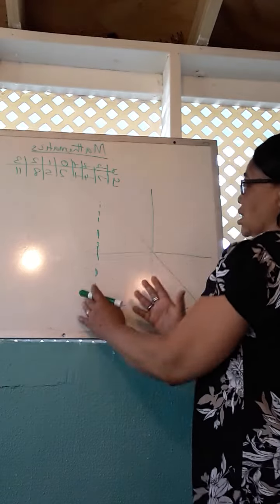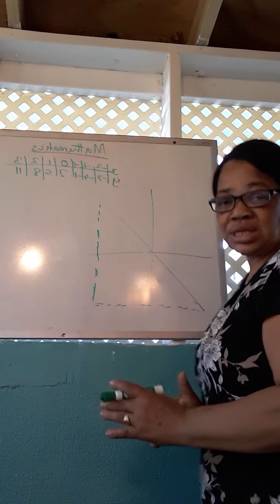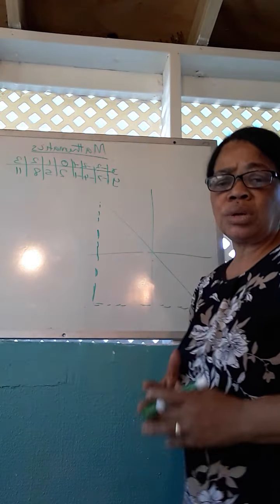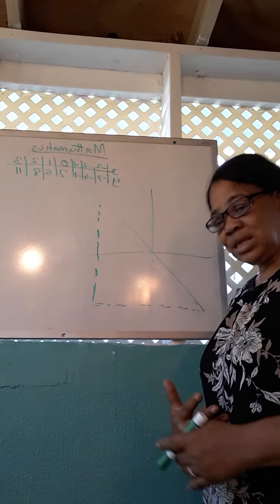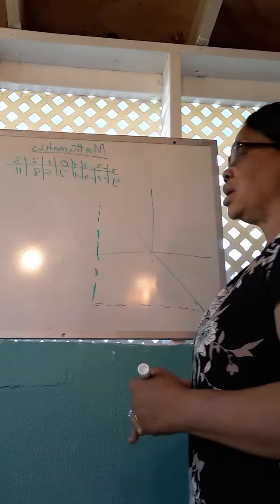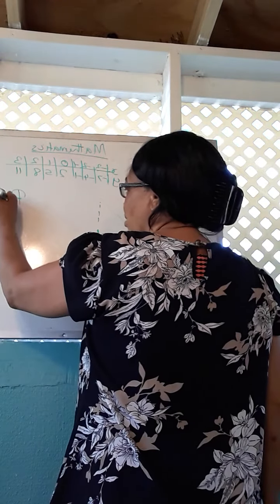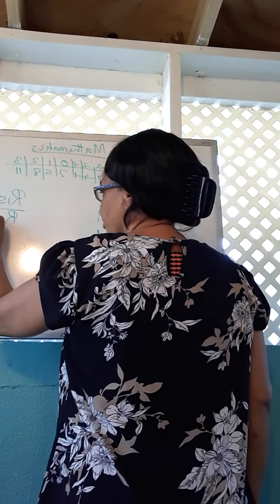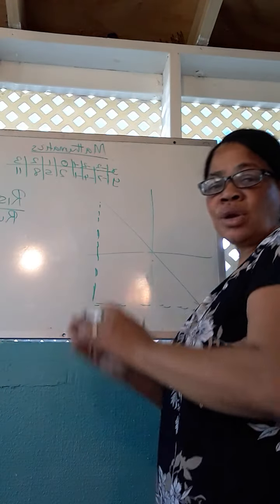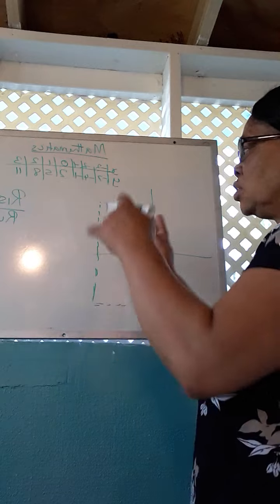And so my gradient or the slope can either be a negative or a positive. Now we had this graph which had a positive gradient. Now how do I work out the gradient or what is the formula for calculating my gradient? To calculate the gradient, it is referred to in mathematics as rise over run.